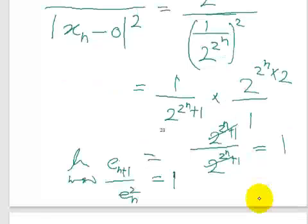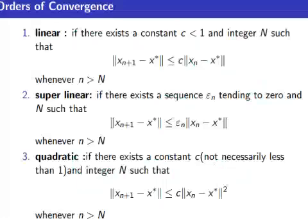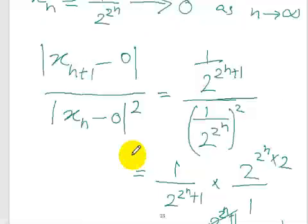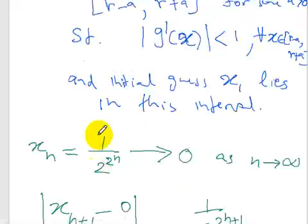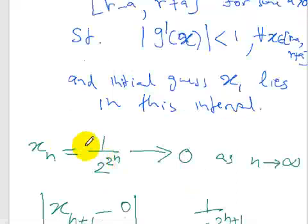The ratio of the error at n+1 stage divided by the error at nth stage squared equals 1. This means the inequality holds, and therefore the sequence converges to zero quadratically. This is an example of quadratic convergence.